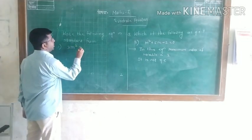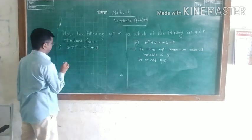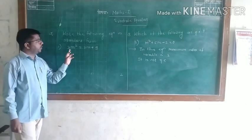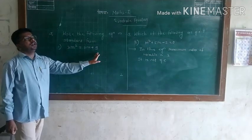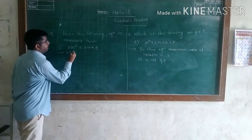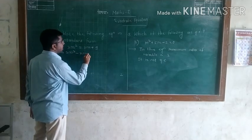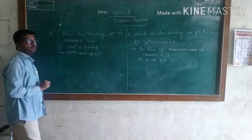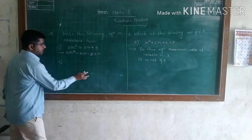Example: 3L² = 2L + 9. We need to write the standard form, where the right-hand side must be zero. So 3L² - 2L + 9 - 9 = 0, giving 3L² - 2L - 9 = 0. This is the standard form of the given quadratic equation.